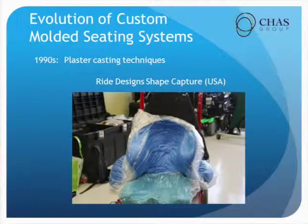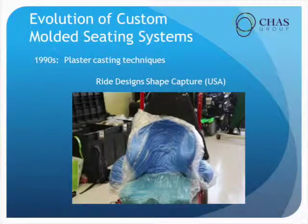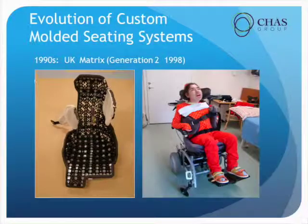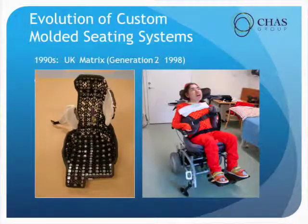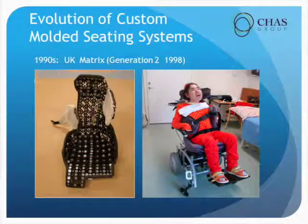Currently we are still using plaster cast molds — Ride Designs' Shape Capture is a perfect example of us still using our plaster cast molds. Here's your generation 2 matrix system. Those of you not familiar with the matrix might not see the differences between generation 1 and generation 2, but here is a client from the UK positioned in a matrix system generation 2.